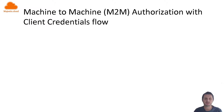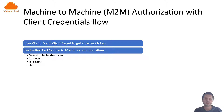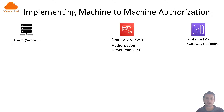But before the demo, let's quickly see what the client credentials flow is and where we can use it. Basically, you can use this for machine-to-machine authorization. It usually uses a client ID and a client secret to get back an access token, which you can then use to make requests to a protected resource.